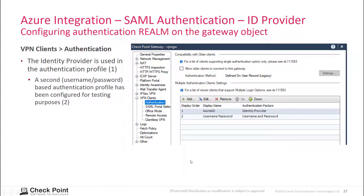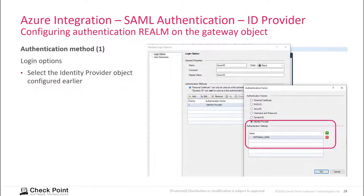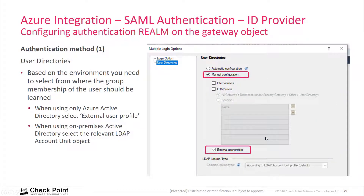Once done, go to the gateway object and under VPN Clients, define the authentication option to use an identity provider. In this example, username and password was also configured for testing purposes to confirm the VPN connection was working. Select the identity provider configured earlier, and define that this identity provider uses groups defined on the identity provider — not on an enterprise LDAP or Active Directory system. Thank you for watching.